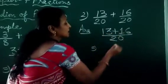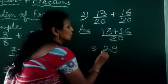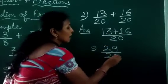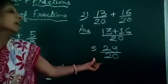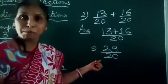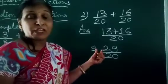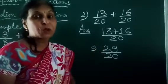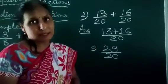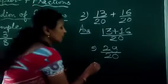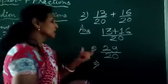Now we add: 6 plus 3 is 9, and 1 plus 1 is 2, giving us 29 upon 20. This fraction is an improper fraction. We convert it into a mixed fraction.